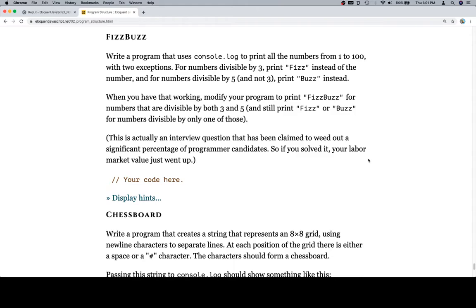Write a program that uses console.log to print all the numbers from 1 to 100 with two exceptions. For numbers divisible by 3, print Fizz instead of the number, and for numbers divisible by 5 and not 3, print Buzz instead.